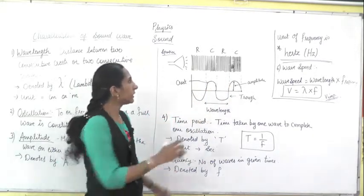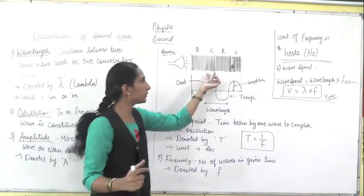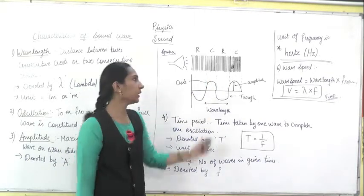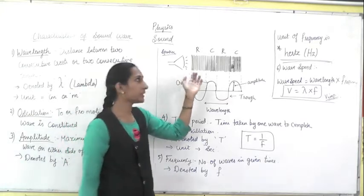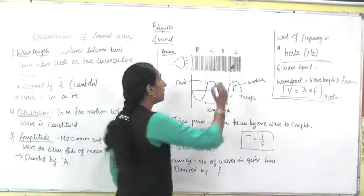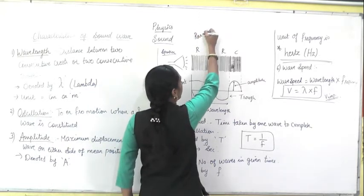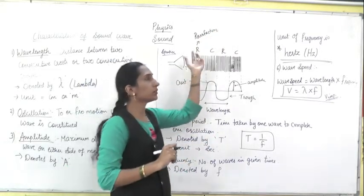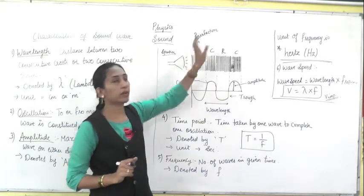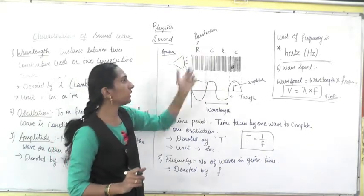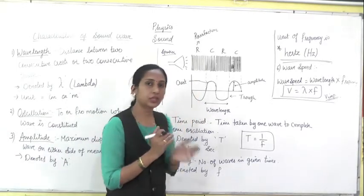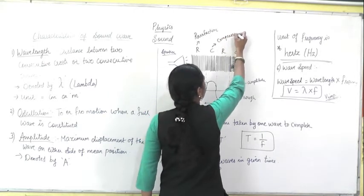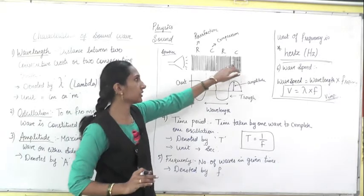The air molecules are less in one region compared to another. The closely drawn lines show more dense regions, and less dense regions are apart. The less dense region is denoted by R — R means rarefaction. And the more compressed region is called compression, denoted by the letter C. So we have rarefaction and compression alternating.